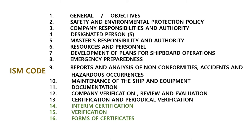This is the ISM Code. The ISM Code consists of Chapter 1 through Chapter 16. Chapter 1: General and Objectives. Chapter 2: Safety and Environmental Protection Policy. Chapter 3: Company Responsibilities and Authority. Chapter 4: Designated Persons. Chapter 5: Master's Responsibility and Authority. Chapter 6: Resources and Personnel. Chapter 7: Development of Plans for Shipboard Operation. Chapter 8: Emergency Preparedness. Chapter 9: Reports and Analysis of Nonconformities, Accidents and Hazardous Occurrences. Chapter 10: Maintenance of Ship and Equipment. Chapter 11: Documentation. Chapter 12: Company Verification, Review and Evaluation. Chapter 13: Certification and Periodical Verification. Chapter 14: Interim Certification. Chapter 15: Verification. Chapter 16: Forms of Certificate.